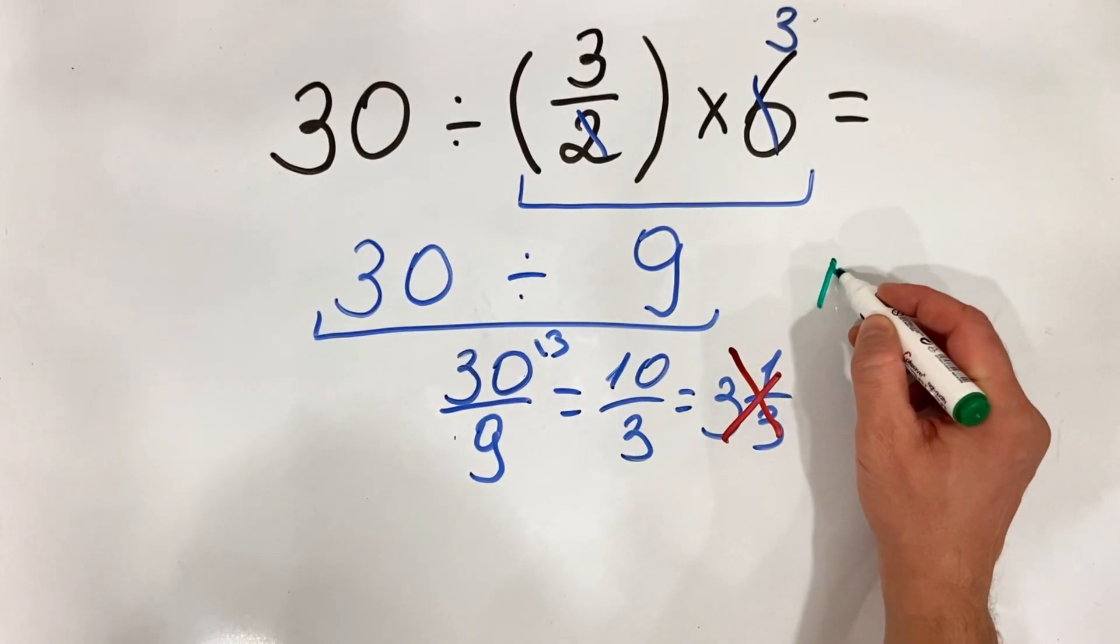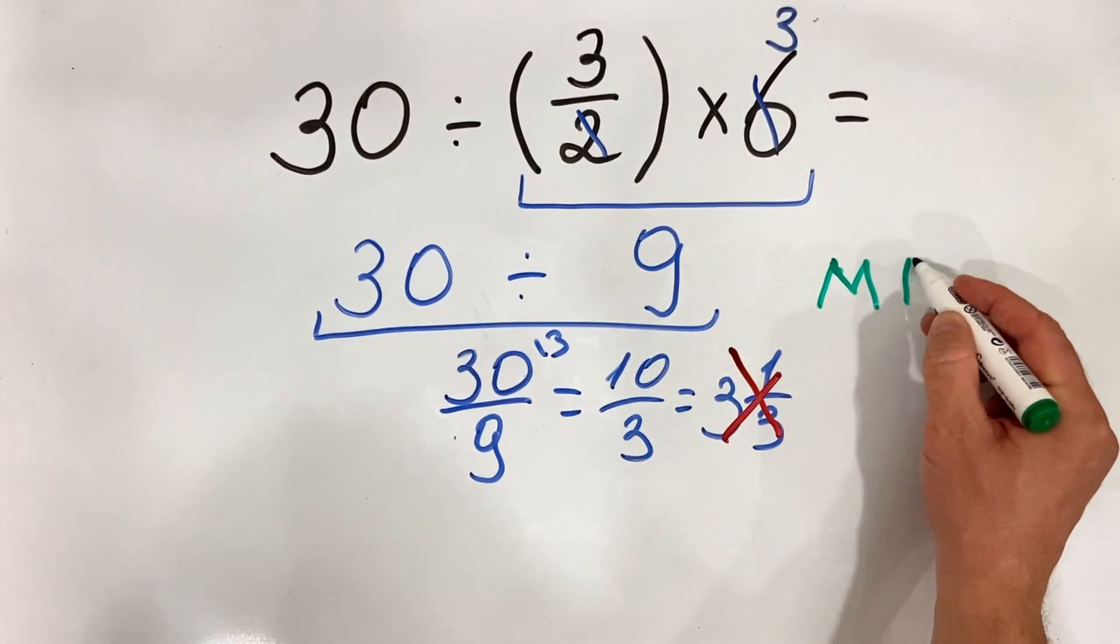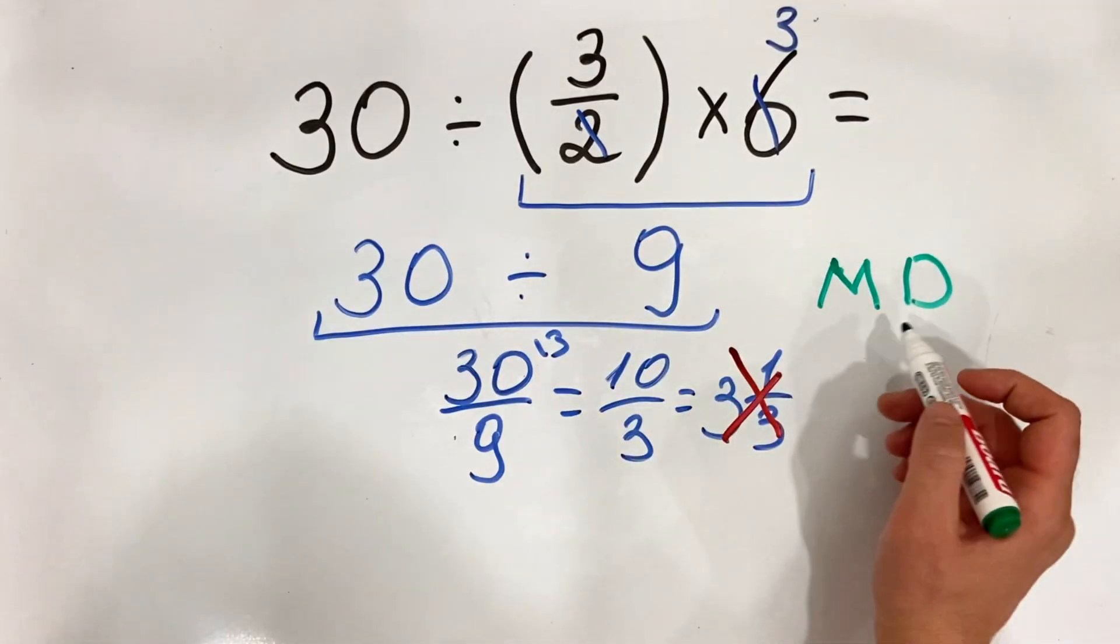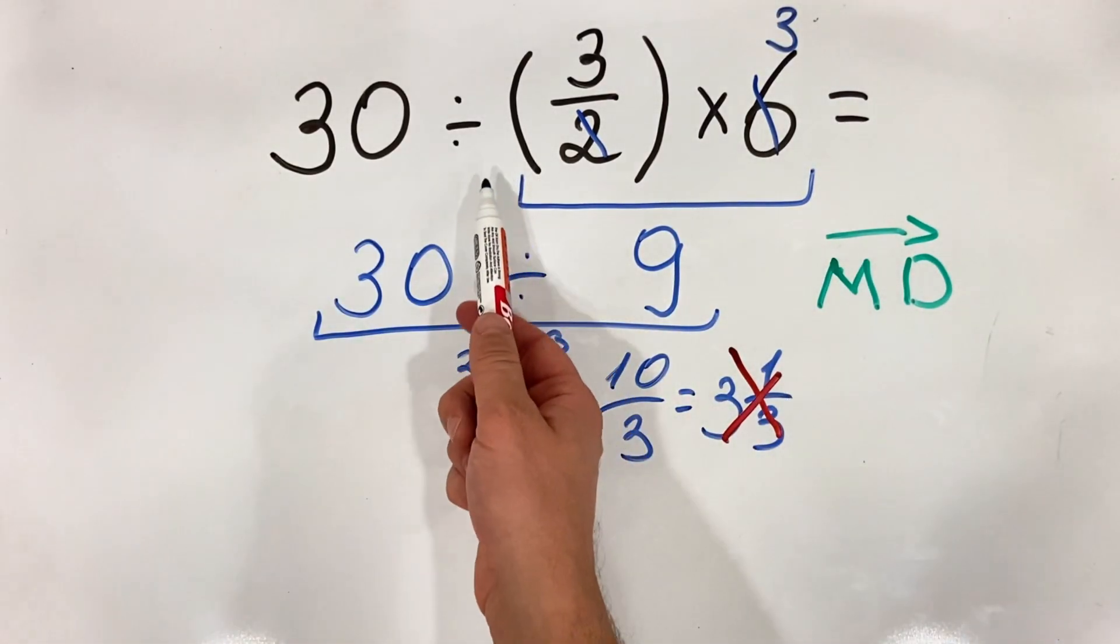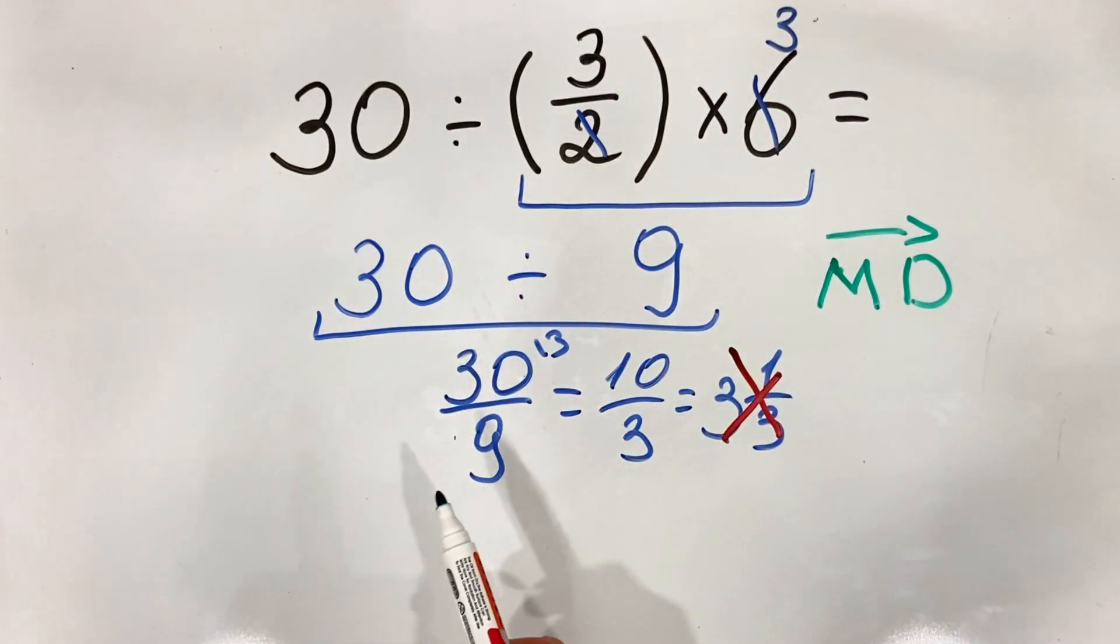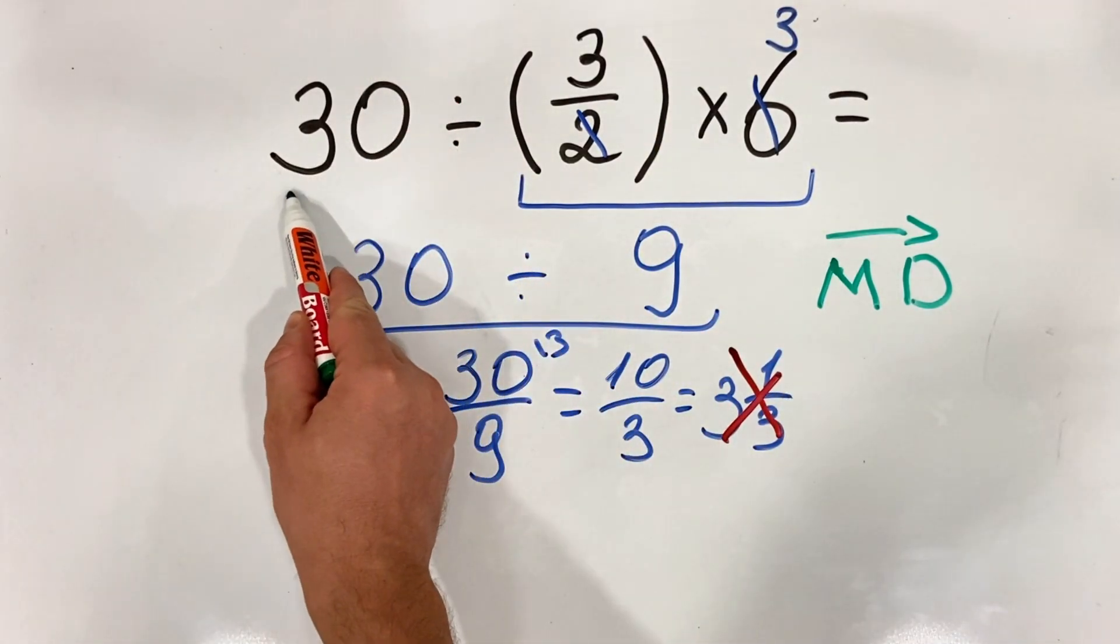multiplication and division have equal priorities and need to be done from left to right. In our case, we have division then multiplication, so we need to do it from left to right.